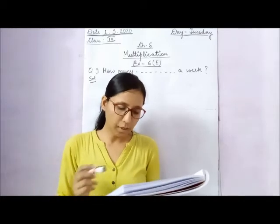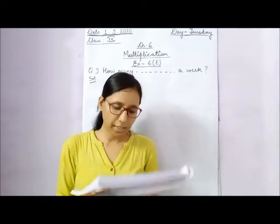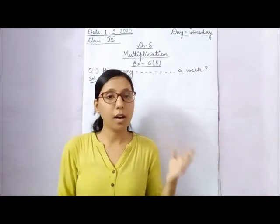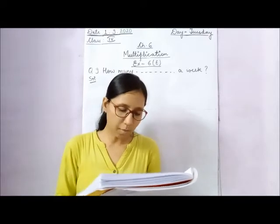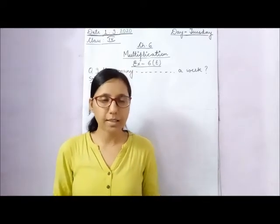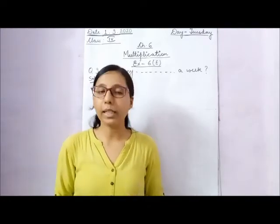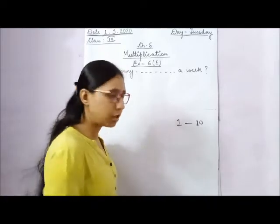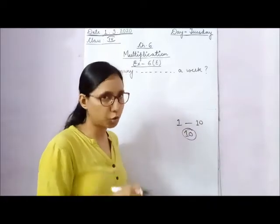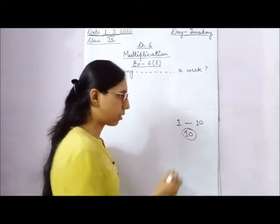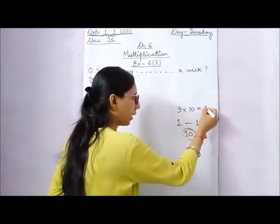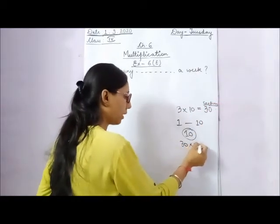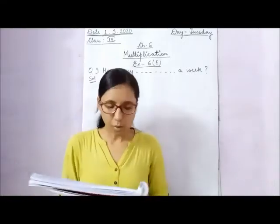Question 8, you will do on your own. Each class in a school has 3 sections and each section has 40 students. Find the total number of students in classes 1 to 10. First, there are 10 classes total. Each class has 3 sections, so 10 multiplied by 3 gives 30 total sections. Then multiply 30 by 40 to find the total number of students.